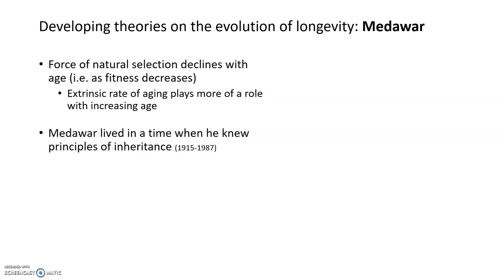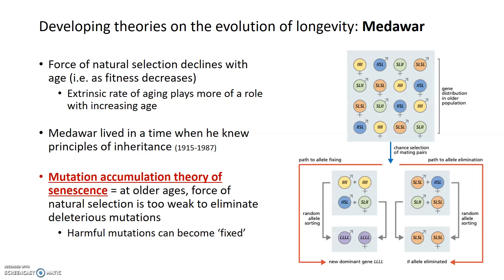Expanding on these ideas, the next scientist is evolutionary biologist Peter Medawar. His main contribution is not that natural selection does not act on aging, as Weismann thought, but rather that the force of natural selection declines with age. As fitness decreases and organisms age, the extrinsic rate of aging — controlled by the environment — begins to play more of a role, and since natural selection acts on genes and not the environment, its force declines as well. Medawar, who lived in the early 1900s to 1987, was able to build his theory on established knowledge of genetics and inheritance, and his theory is known as the mutation accumulation theory of senescence.